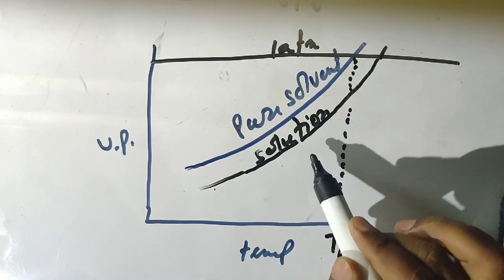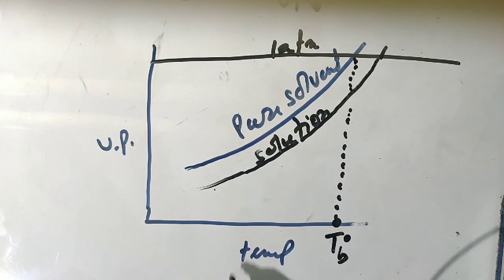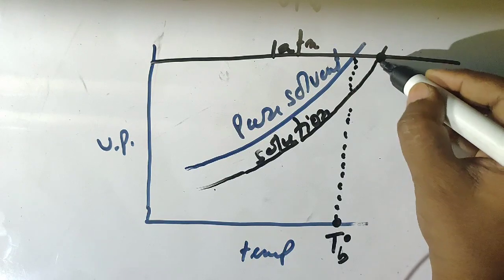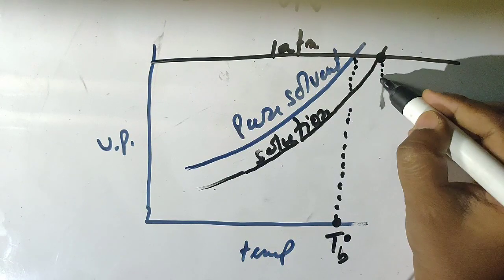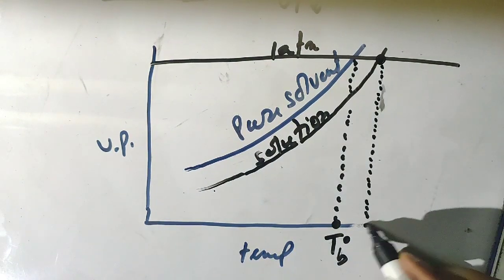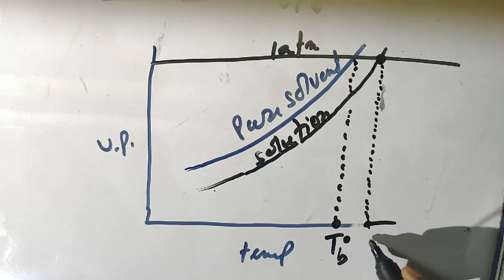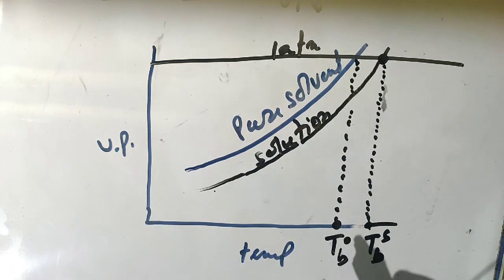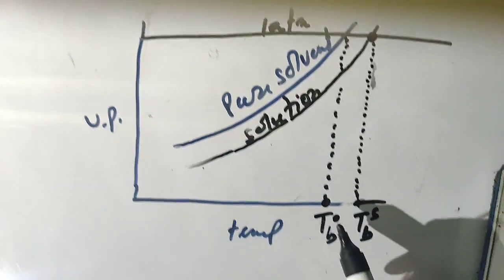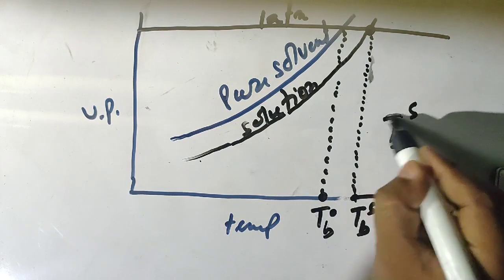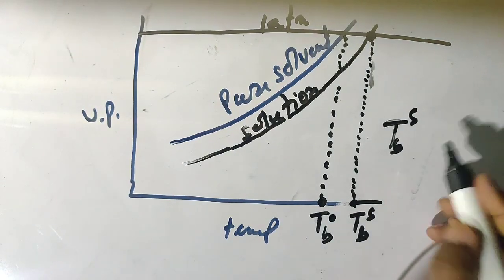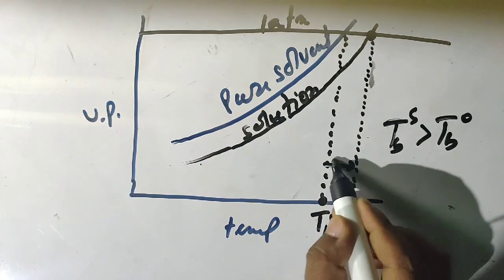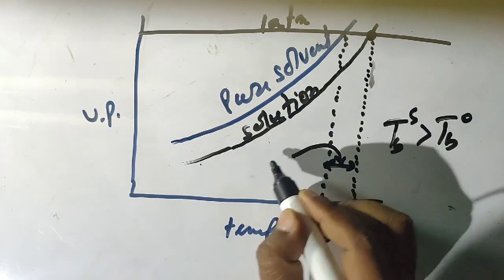This is the vapor pressure curve of the solution when the non-volatile solute is added to the solvent. When we increase temperature, its vapor pressure also increases, and when its vapor pressure equals 1 atm, the corresponding temperature represents the boiling point of the solution, denoted as Tb(s). It is clear from this graph that the solution boils at a higher temperature — Tb(s) is greater than Tb⁰.